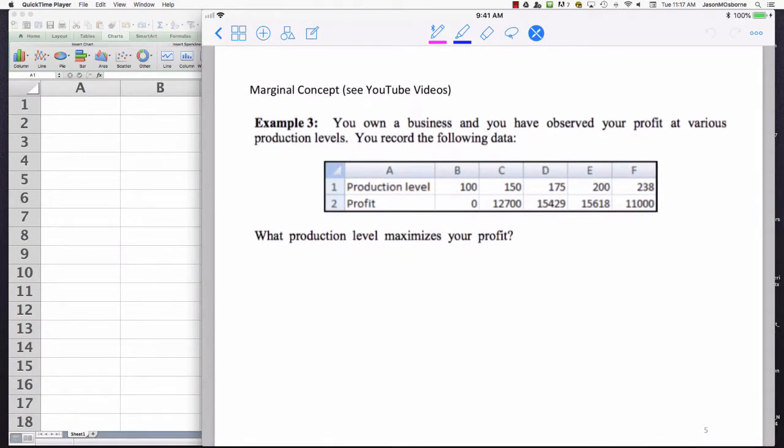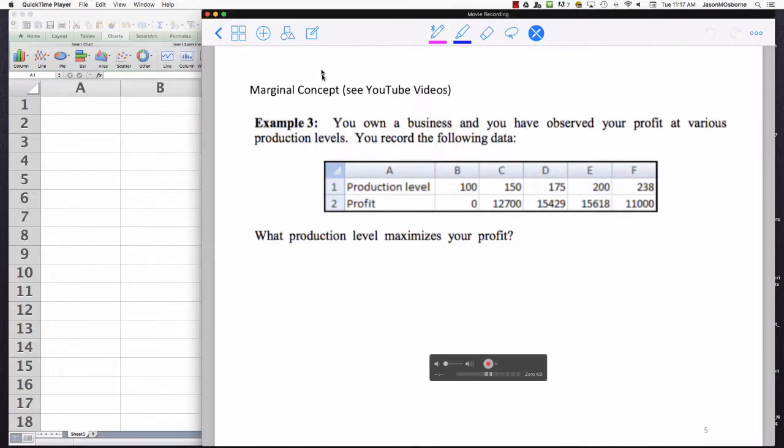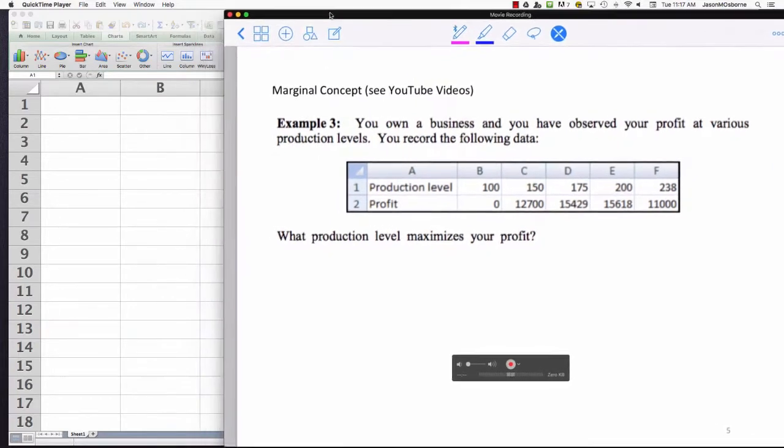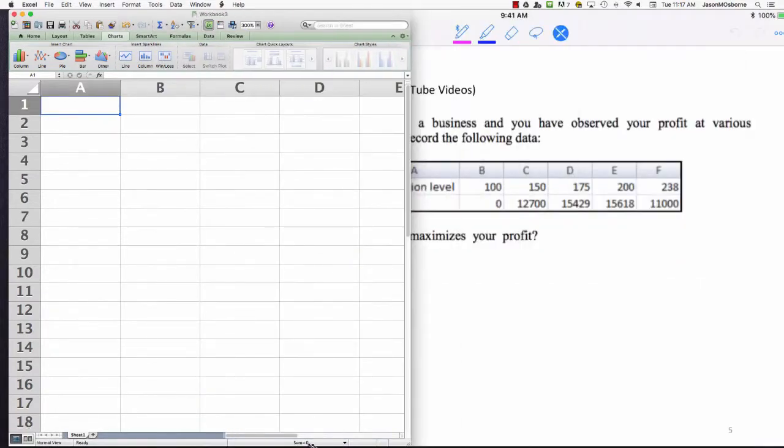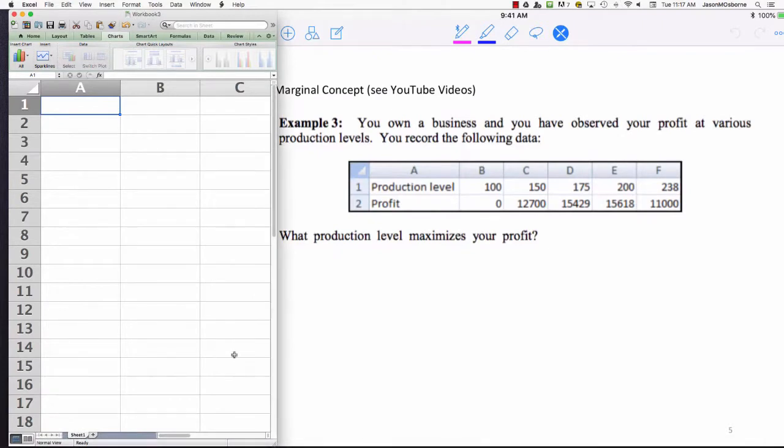Here is the problem I would like to look at now. Notice that in this problem you have been given some data - production level data and your profit at those various production levels. So let's input this data into Excel now. We've got profit production level and profit at a production level of one hundred, one fifty, one seventy-five, two hundred, and two thirty-eight.